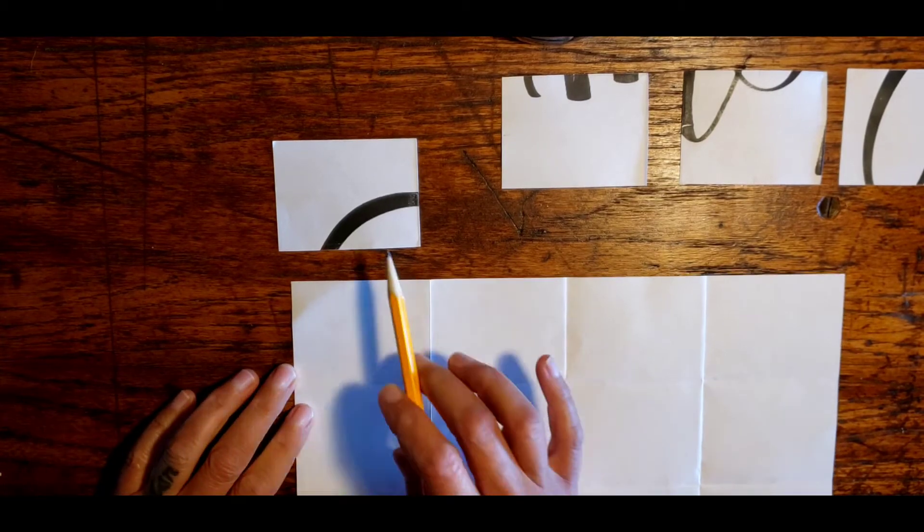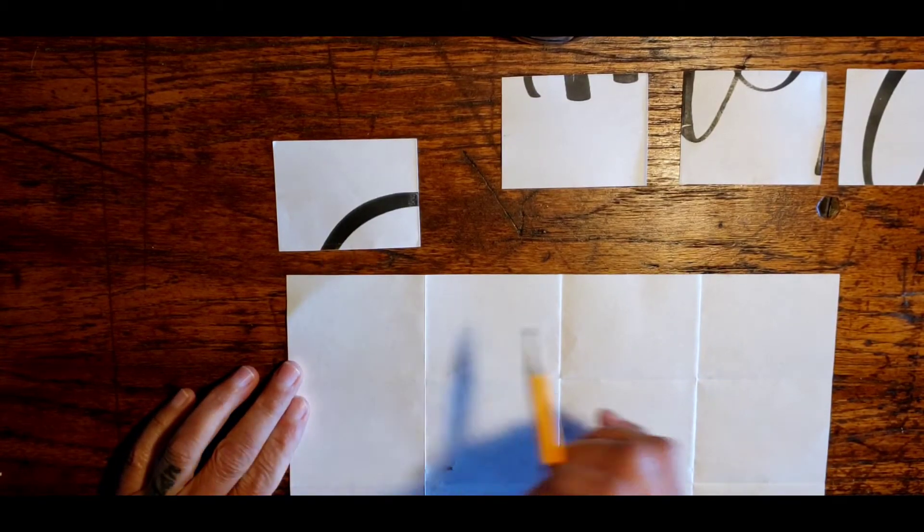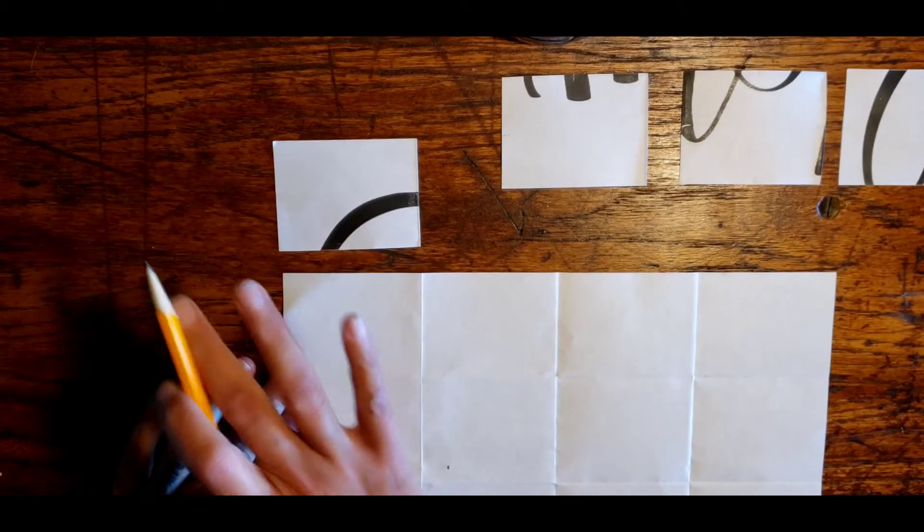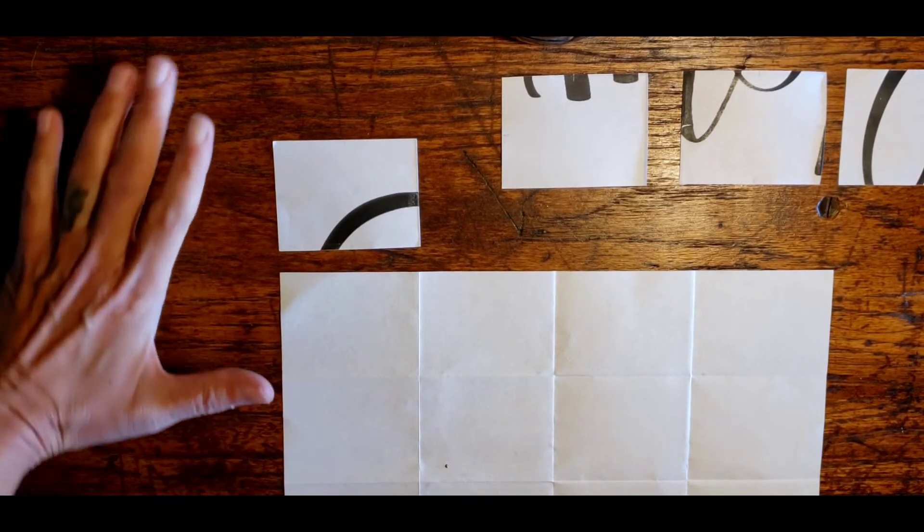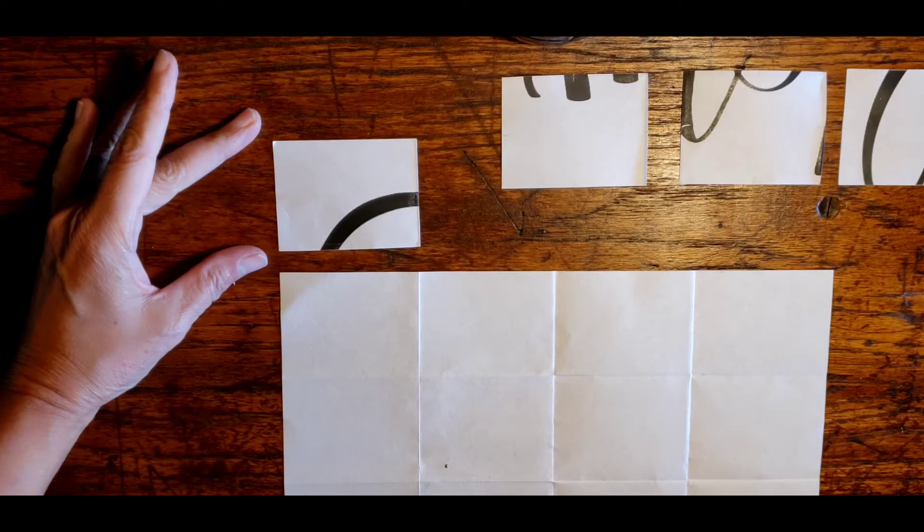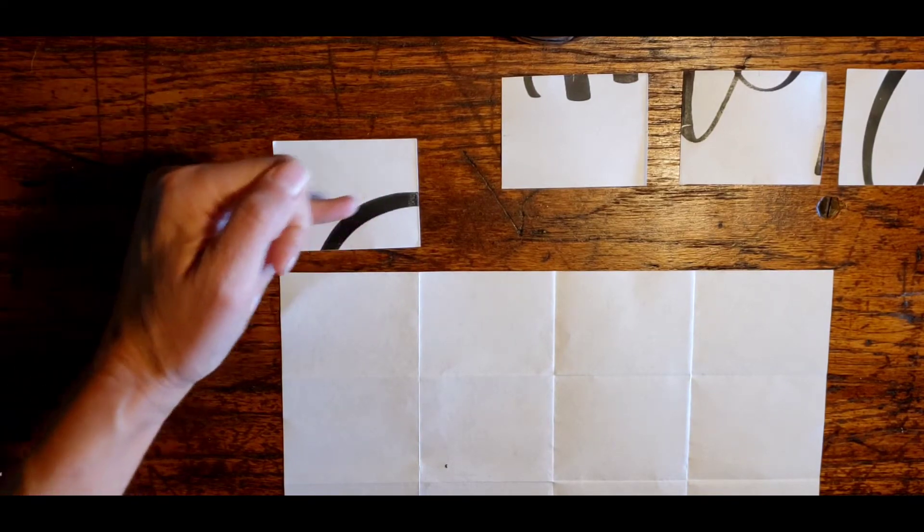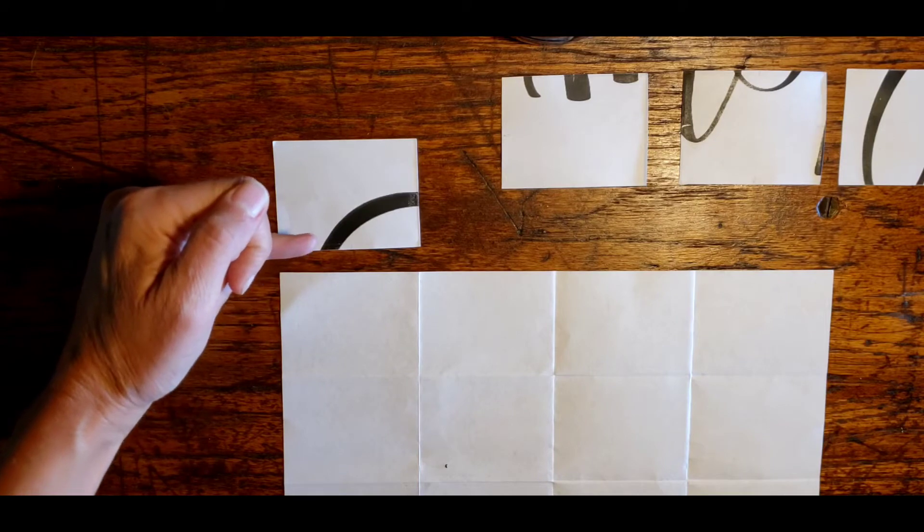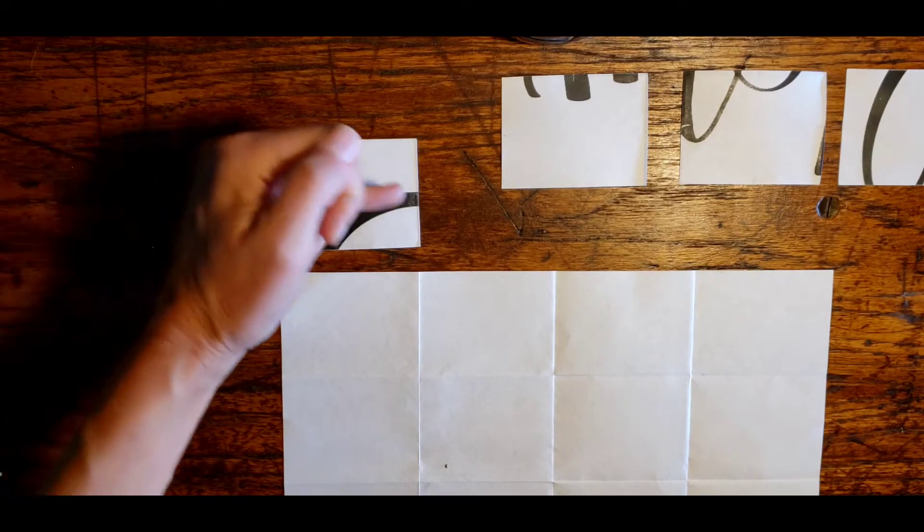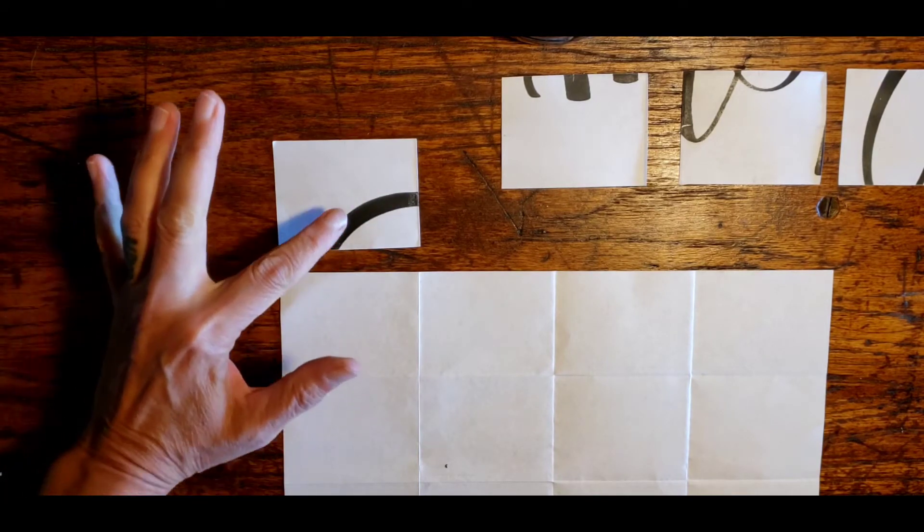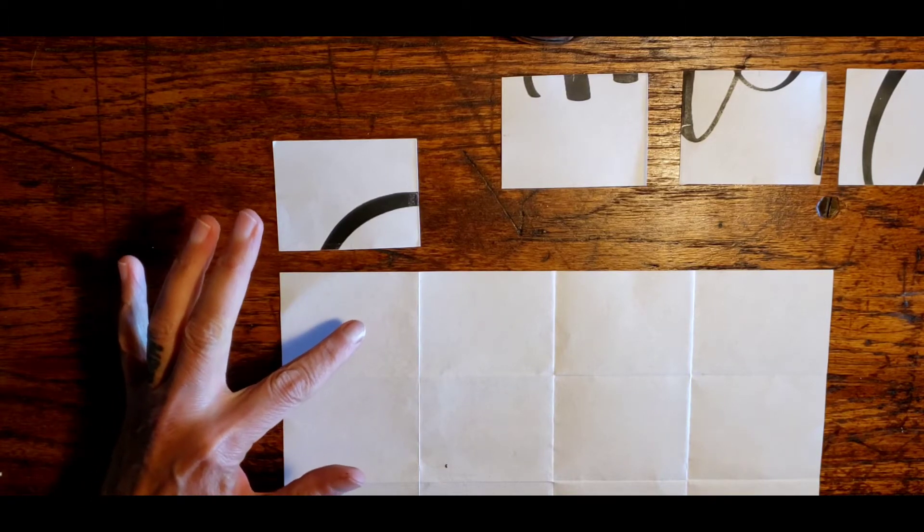And we're going to try to draw what we're seeing the way we see it. And we kind of take in the whole shape, this whole rectangle, and we want to see and try to draw the curve that we're seeing. We want to draw in relation to the position of the rectangle. It's kind of in the lower right portion of the rectangle.